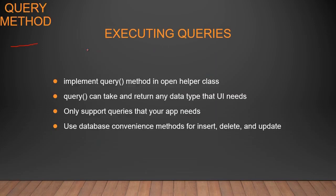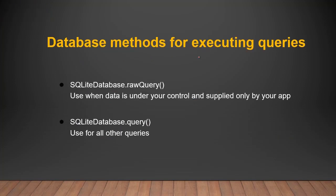Let's talk about the query method. Create an object of the OpenHelper class, and using that object, call the query method inside our SQLiteOpenHelper class. This query method takes some parameters and returns a data type that your user interface needs based on the condition passed. There are two ways to return data from the database table: raw query and query.